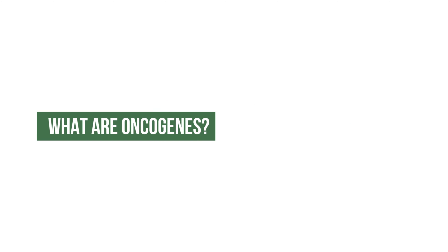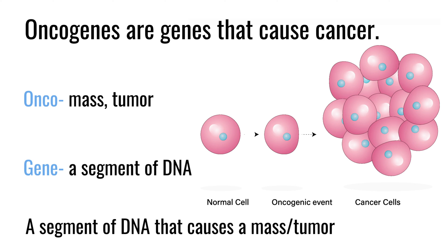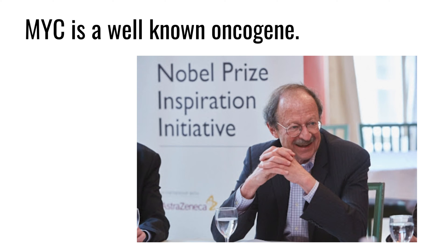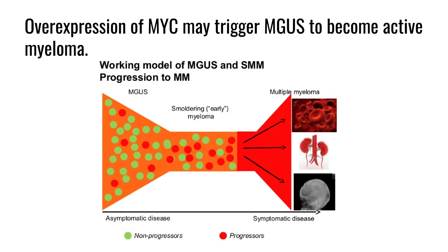Oncogenes are genes that are oncogenic, meaning they cause cancer. One of the most famous oncogenes is MYC — it was one of the first described by Harold Varmus, who won the Nobel Prize for it. He found it in chickens, and it turns out to be an incredibly important oncogene in multiple myeloma. We think it's one that is associated with the progression from the benign disease monoclonal gammopathy of undetermined significance (MGUS) to multiple myeloma, not in all patients but in a fair number.